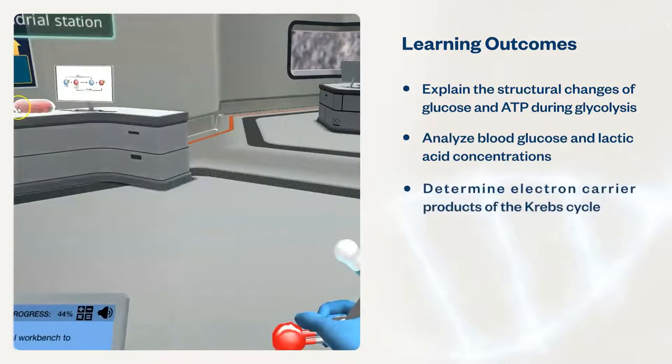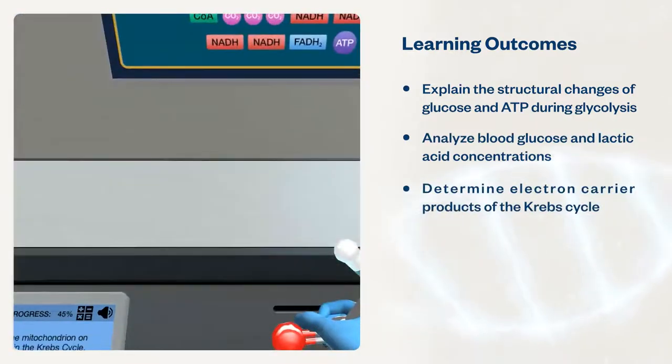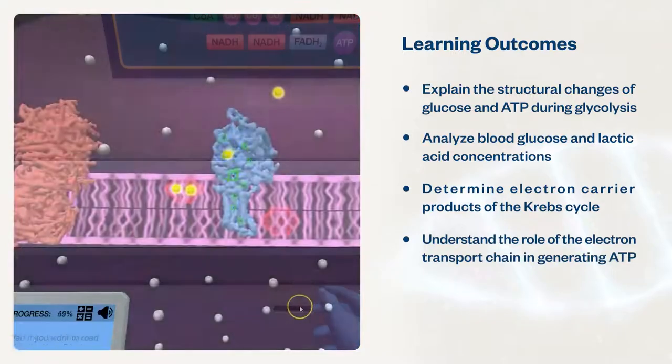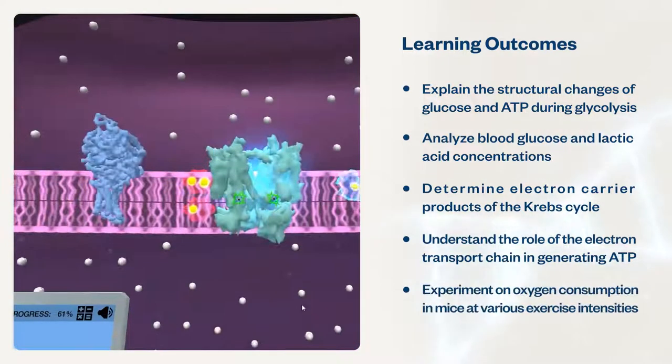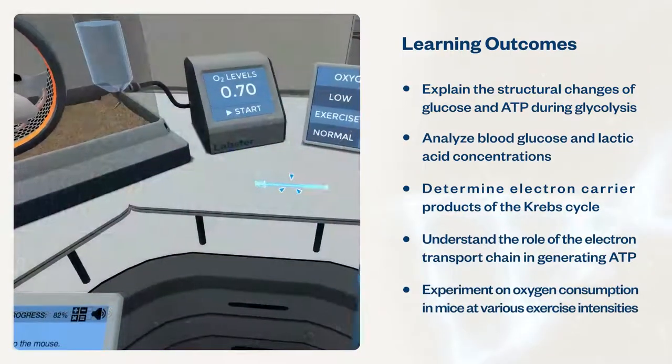Students will also determine electron carrier products of the Krebs cycle, understand the role of the electron transport chain in generating ATP, and experiment on oxygen consumption in mice at various exercise intensities.